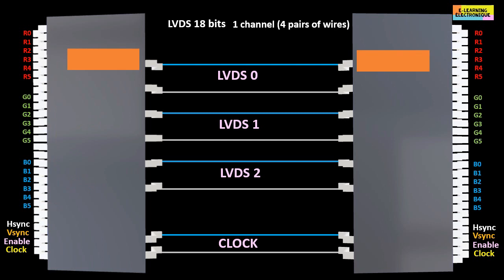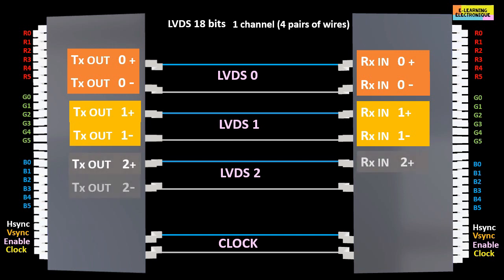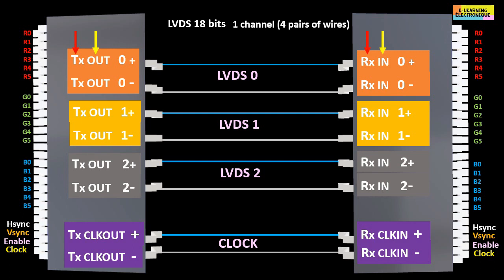On the schematics and on the electronic boards, you will find the inscriptions that identify each wire. TX is the abbreviation for transmitter. RX for receiver. OUT for output and IN for input. To complete this identification,